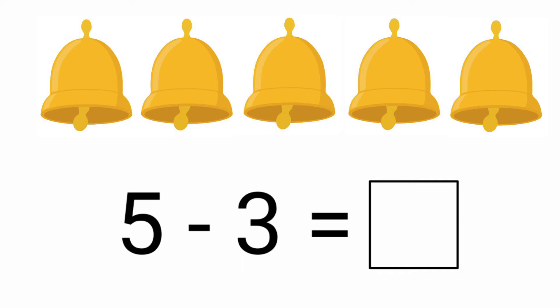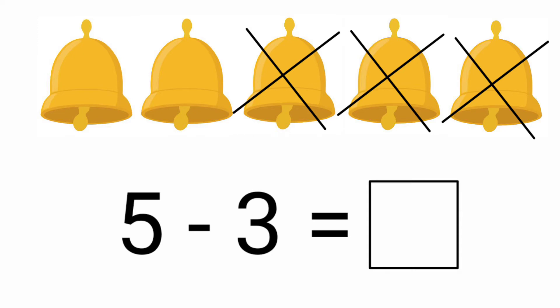Look at the next picture. How many balls are there? There are 5 balls. We subtract from right to left: 5 minus 3. We need to subtract 3 balls from 5: 1, 2, 3. So 2 balls are left. The answer is 2. Let's write it in the given box: 5 minus 3 equals 2.